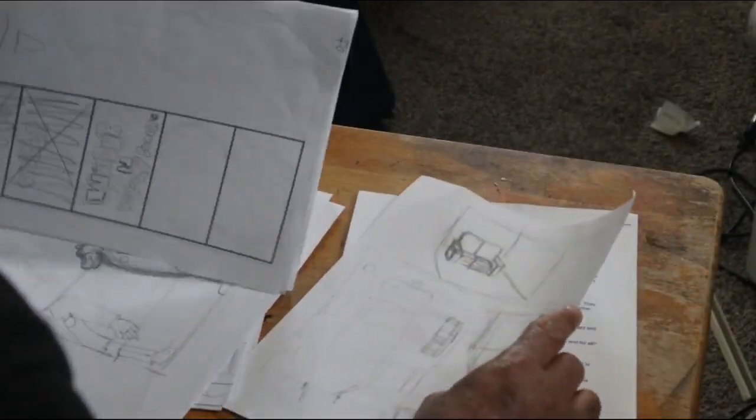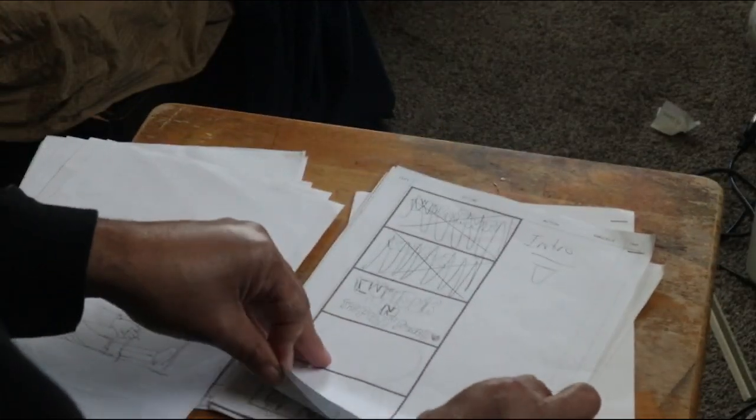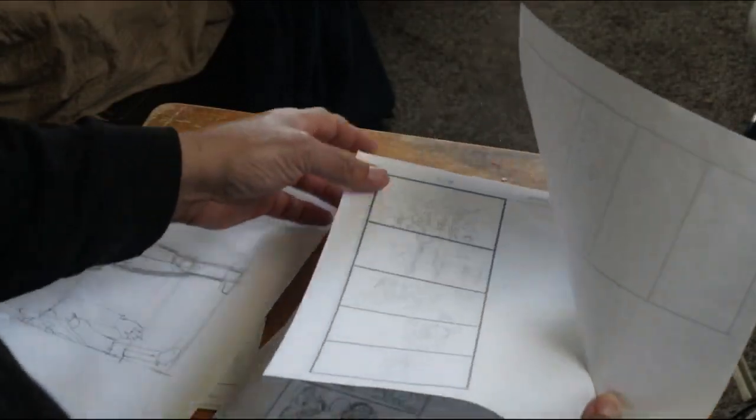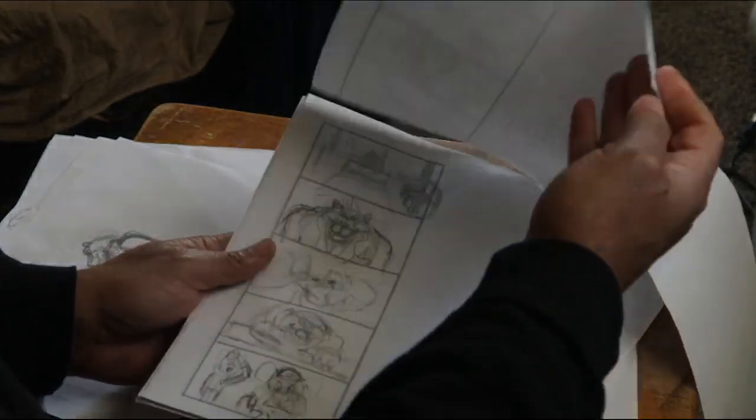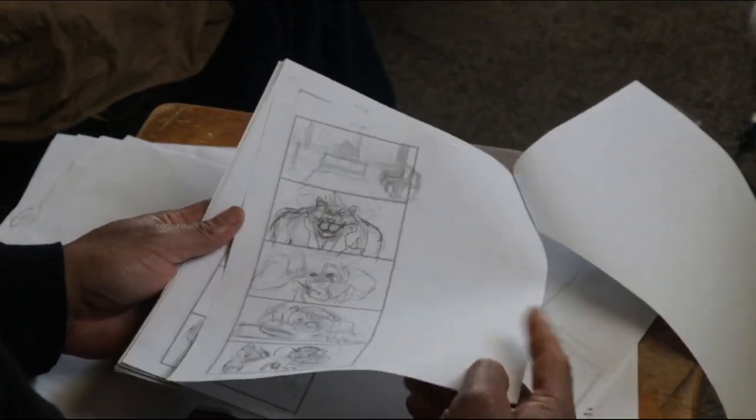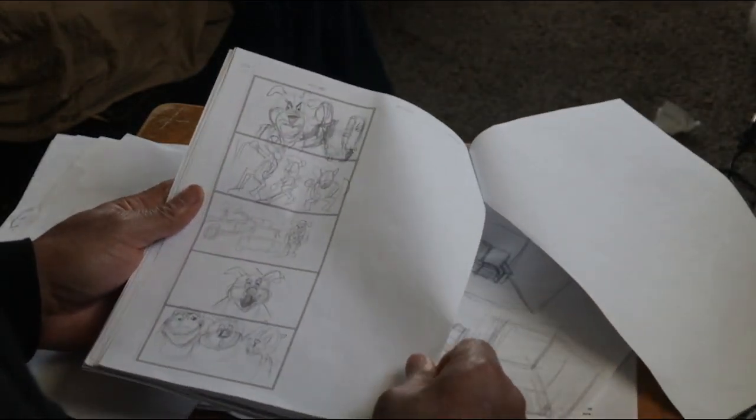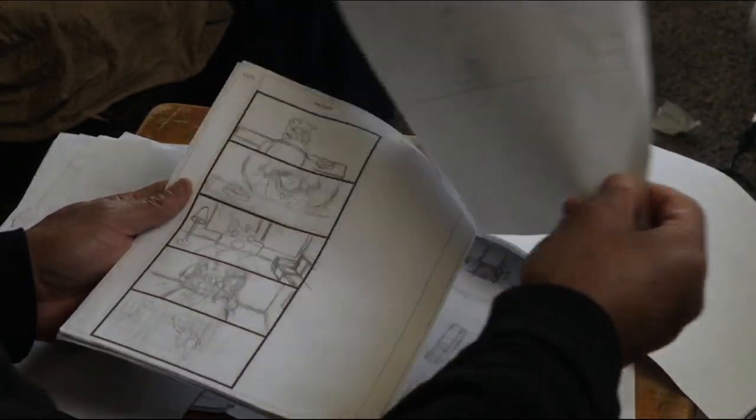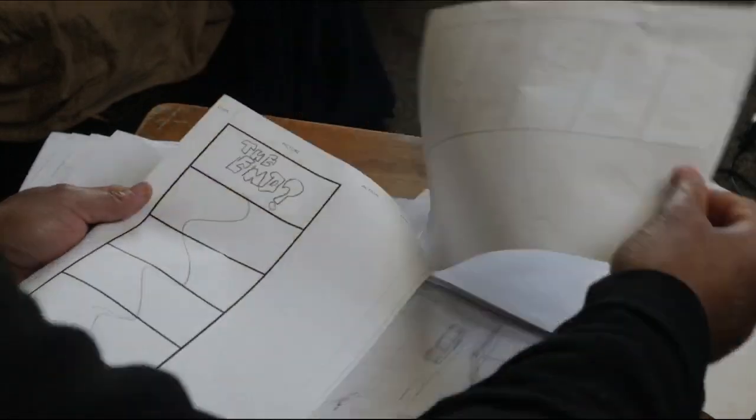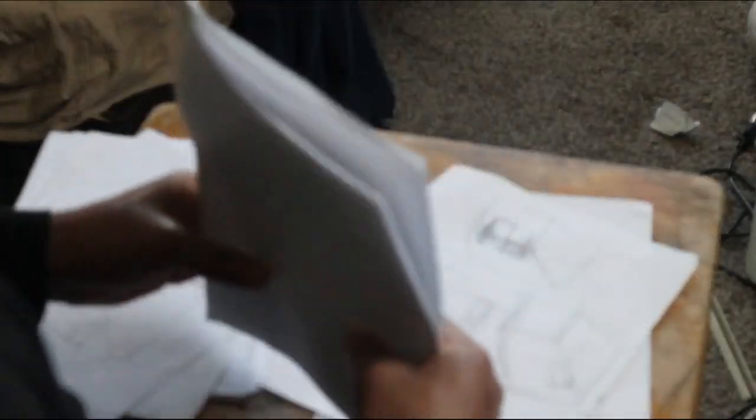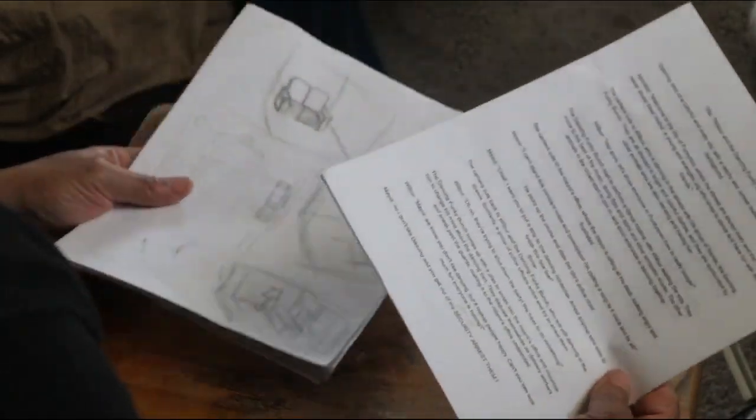This is the storyboard. The process to show you the progress of my storyboard. So what I'm doing is getting all the characters, getting all the layouts to go in, then I'm going to do the keys and the animatics.